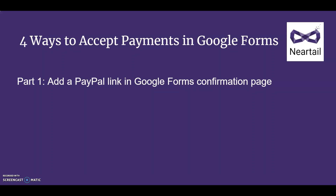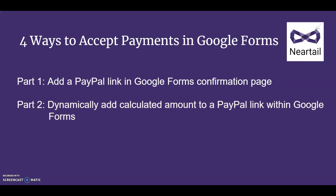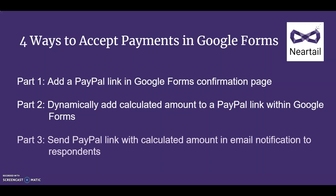We have also seen the problems that come with that approach. In part two we discussed how to build a PayPal link with a dynamically calculated total so that your customers can click on it and pay the correct amount. Of course there is still the problem of manual reconciliation of payment and orders. Here in part three I'm going to show you how to send a PayPal link automatically pre-filled with calculated totals when someone submits an order in your Google Form.